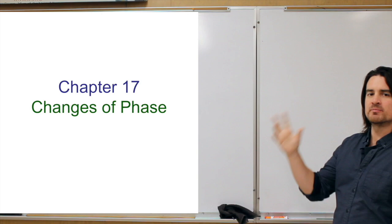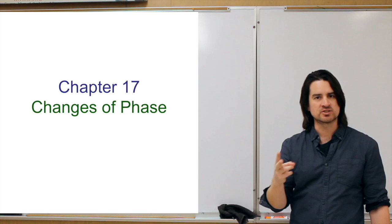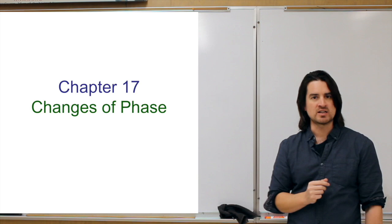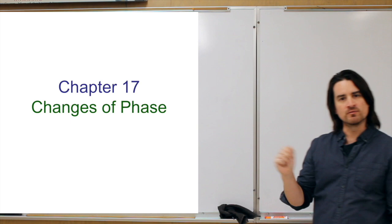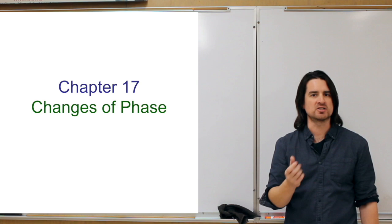We've talked about temperature and how you change it — you add heat. The last lecture covered how you add heat: conduction, convection, and radiation, the three ways of transferring heat. Now we're going to talk about how you get from one phase to another — how a liquid becomes a solid, or a solid becomes a liquid — and what's the process that takes place when that happens.